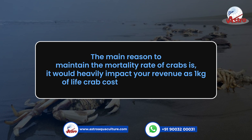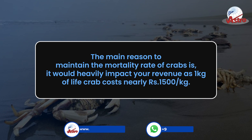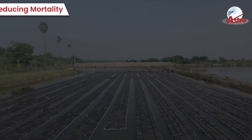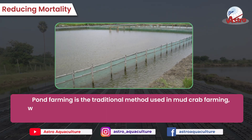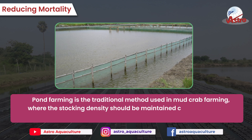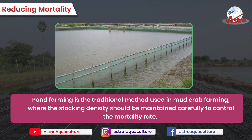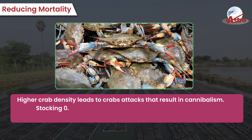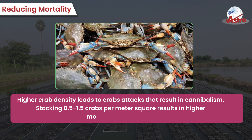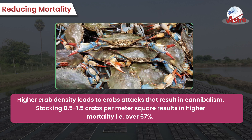In pond farming, the traditional method for mud crab farming, stocking density must be carefully maintained to control mortality. Higher crab density leads to crab attacks and cannibalism. Stocking at 0.5 to 1.5 crabs per square meter results in higher mortality, over 67 percent.